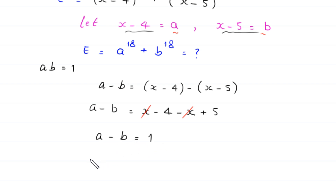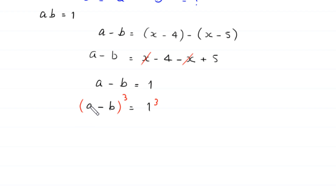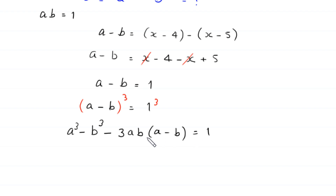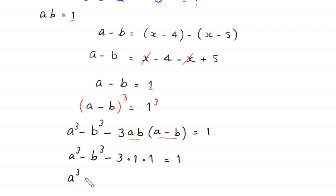We take the cube of both sides of a minus b equals 1. Using the identity (a minus b) cubed equals a cubed minus b cubed minus 3ab(a minus b), we get a cubed minus b cubed minus 3 times ab times (a minus b) equals 1. Replacing ab with 1 and (a minus b) with 1 gives a cubed minus b cubed minus 3 equals 1.